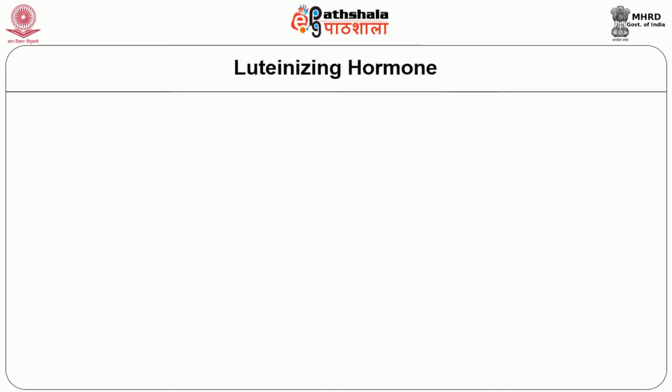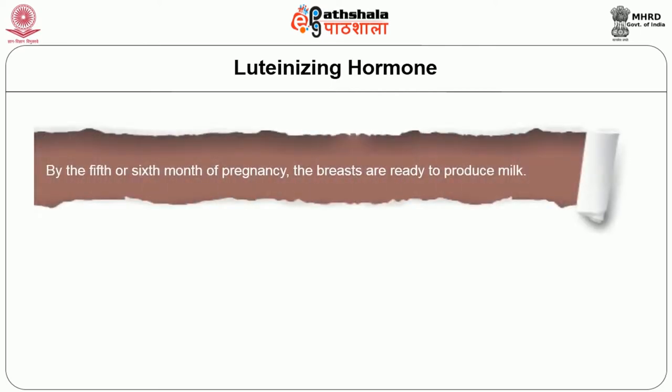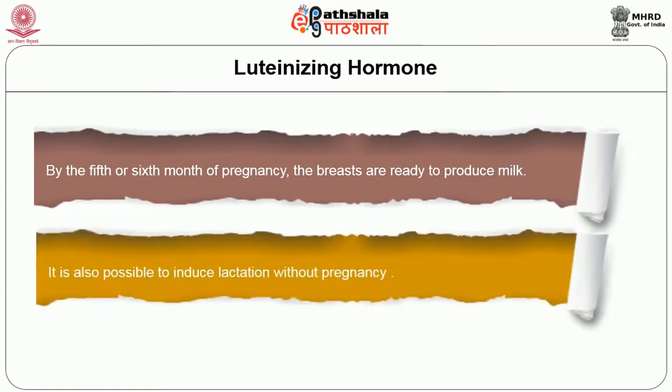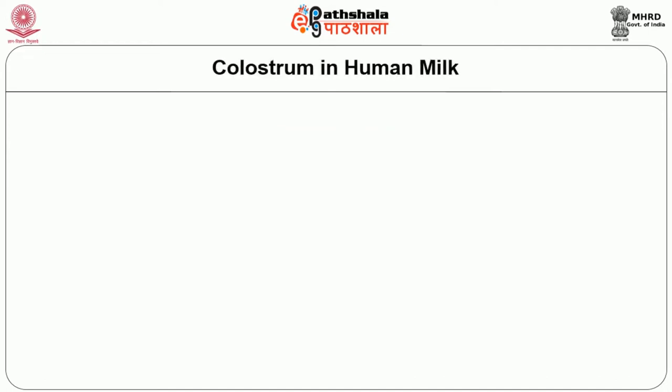The next hormone is luteinizing hormone (LH). By the fifth or sixth month of pregnancy, the breasts are ready to produce milk. It is also possible to induce lactation without pregnancy by this hormone. So far we have discussed various hormones involved in reflex action. Now we will move on to the role of colostrum in human milk — what colostrum is and the benefits of colostrum in breast milk.